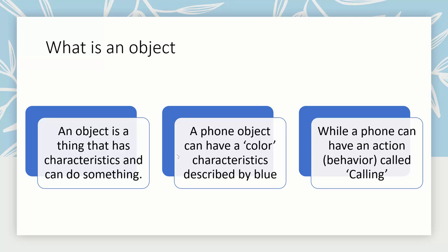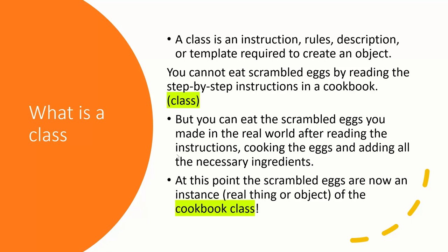For instance, humans have characteristics — humans have a race. You could be white, Hispanic, Caucasian, or of African descent. These are all ways to describe objects based on their characteristics and what they do. A class is an instruction, rules, or description — a template required to create an object.